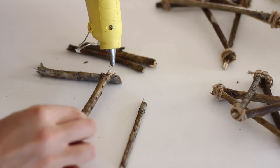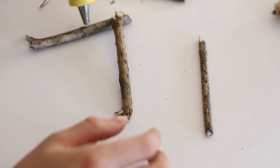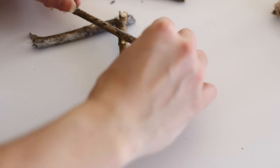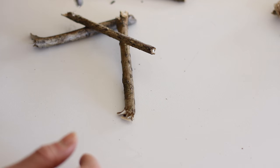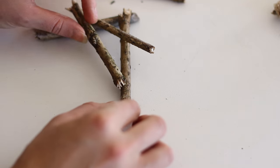Now this next DIY is this Rustic Star Mobile. I thought this would be kind of a cool idea because chances are you have some trees in your backyard and I just went out and found a bunch of sticks and decided to make these hot glued stars to hang in my bedroom. It just gives it that winter feel.